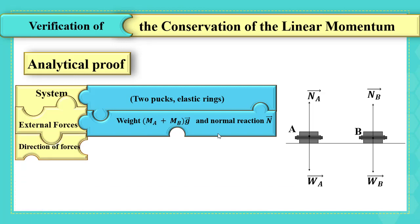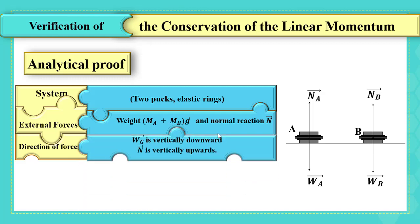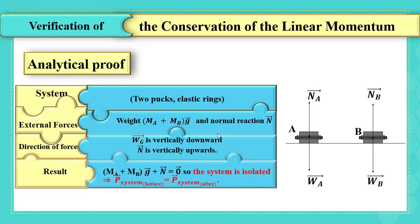What are the directions of these forces? Weight is vertically downward, where n is vertically upwards. What's the result then? If we add these two forces, then the answer is zero vector, so the system is isolated.